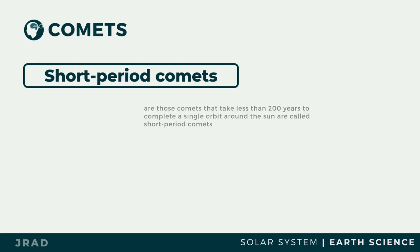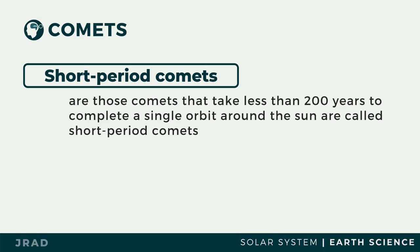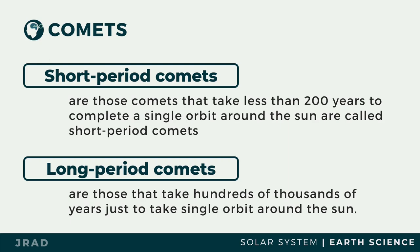Comets are classified based on their orbital period. Those comets that take less than 200 years to complete a single orbit around the Sun are called short-period comets. Long-period comets are those that take hundreds of thousands of years just to complete a single orbit around the Sun.